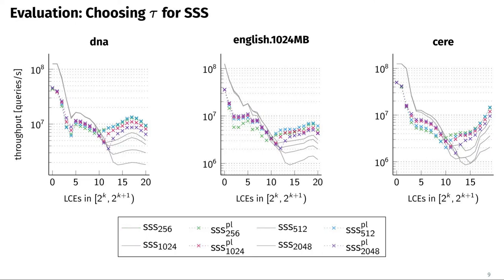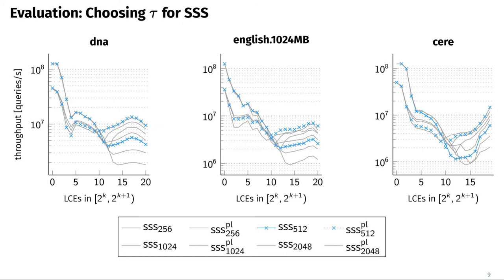For the prefer-long version, throughput is significantly lower for small LCE values because we execute a successor query before the naive scan, but the result is never used when the mismatch is found early. The opposite holds for long LCE values, where fewer naive comparisons are needed, resulting in higher throughput. Across all texts, the prefer-long version with tau equals 512 is the fastest for long LCE values. Therefore, we will only consider tau equals 512 when comparing our string-synchronizing set data structure against all other LCE algorithms.